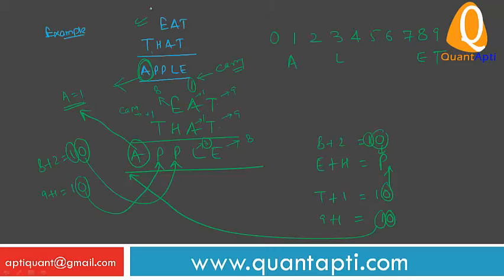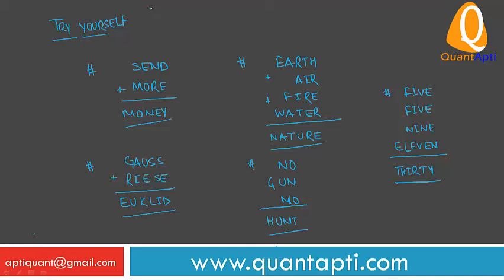You can try this question again for self-assessment. Now try yourself. Some of the problems are here: SEND plus MORE equals MONEY, EARTH, AIR, FIRE, WATER, NATURE. Various other examples for practice.